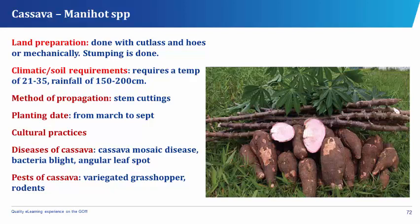The planting date of cassava is from March to September. The cultural practices involved in cassava are weeding, fertilizer application, with a maturity period of 8 to 15 months depending on the variety, as well as harvesting, processing, and storage. Diseases that affect cassava are the cassava mosaic disease, bacterial blight, and the angular leaf spot. Pests that attack cassava are the variegated grasshopper and rodents.